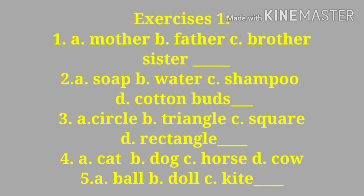Number two: soap, water, shampoo, cotton buds. Number three: circle, triangle, square, rectangle. Number four: cat, dog, horse, cow.